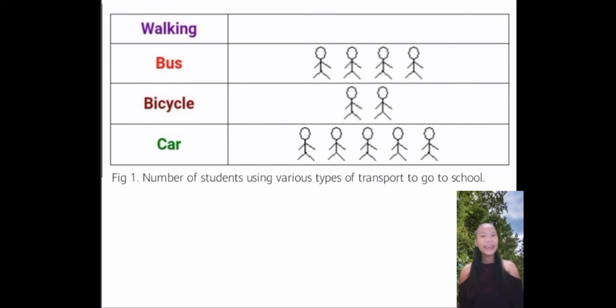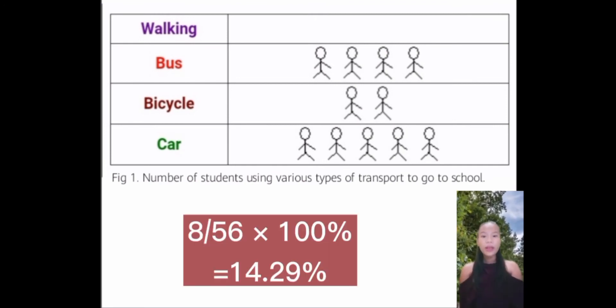And for letter C: 8 over 56 — since 56 is the total number — multiplied by 100% is equal to 14.29%.